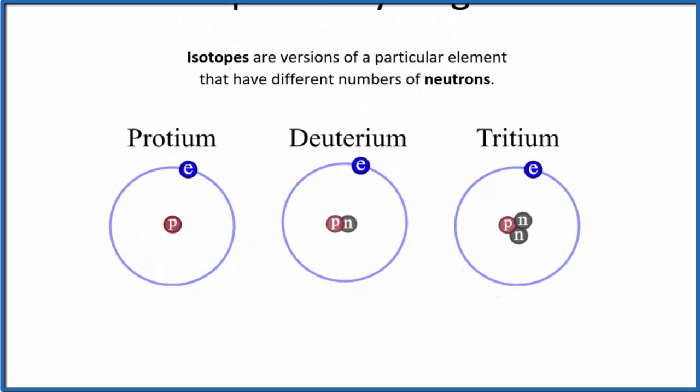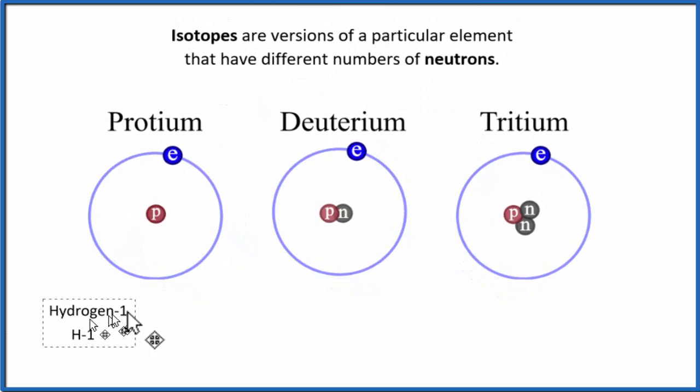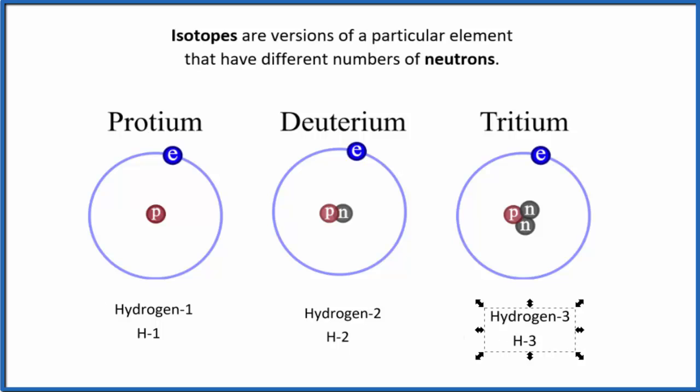If we wrote the notation, we would call this hydrogen-1, which you could write H-1, hydrogen-2, and then hydrogen-3. So that's hyphen notation. This number here—that's the protons plus neutrons. We only have one proton, so it's one. Here we have a proton and neutron, so 1 plus 1 gives us 2, and so on.